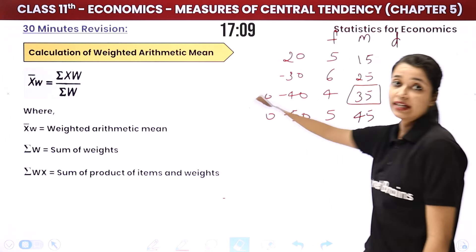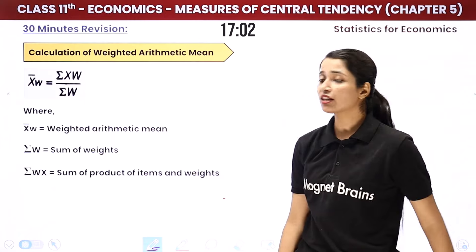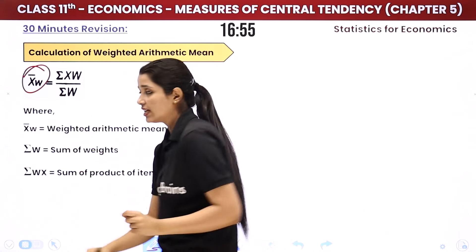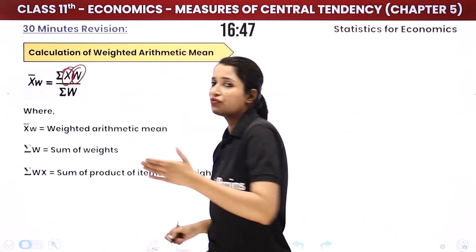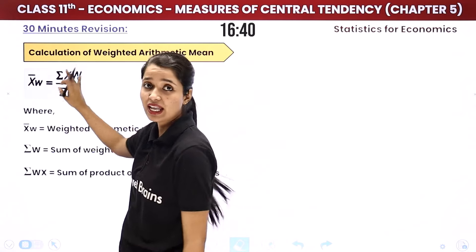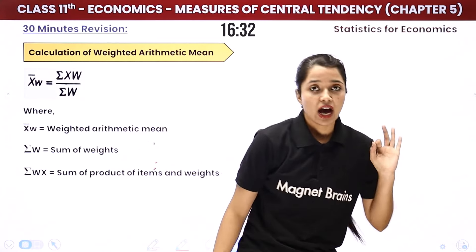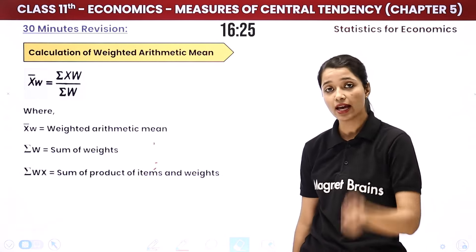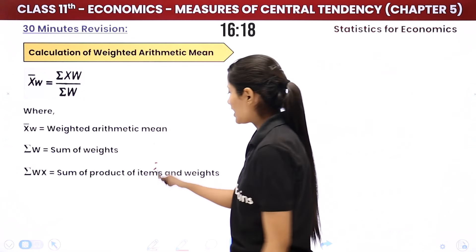Now weighted arithmetic mean. Our simple arithmetic mean is complete. For weighted arithmetic mean, denoted as X̄w, the formula is: Summation of XW divided by Summation of W. Assign various weights W to different values, multiply each X by its weight W to get XW, then sum all XW values. Divide by Summation of W to get the weighted mean. Students, there are many questions to solve on this — everything is available on the channel. Notes for this chapter are also available; the link is in the description box.